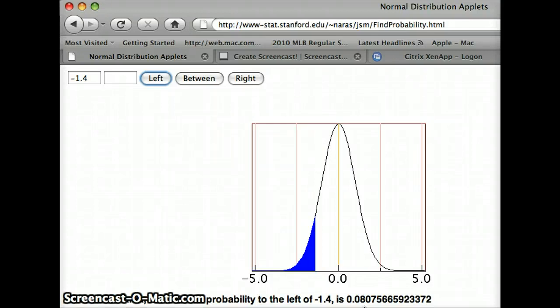So the probability z is less than negative 1.4 is 0.0808. We can also determine that on Minitab.